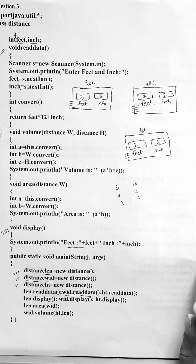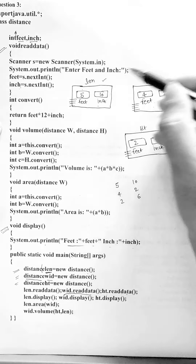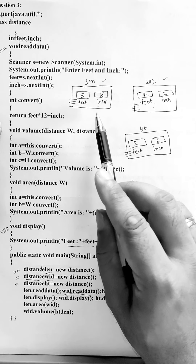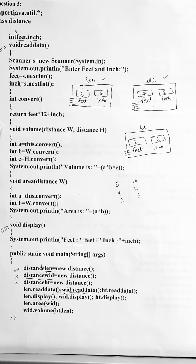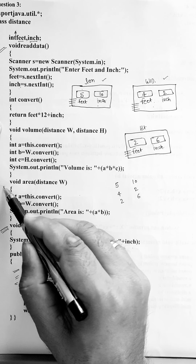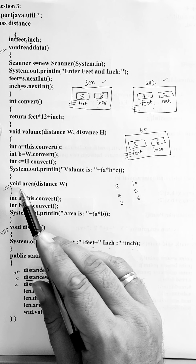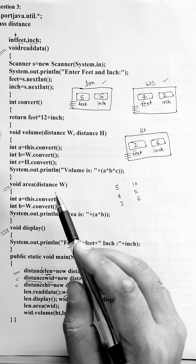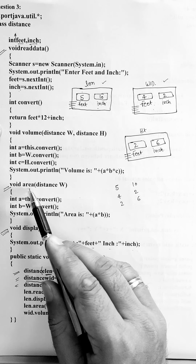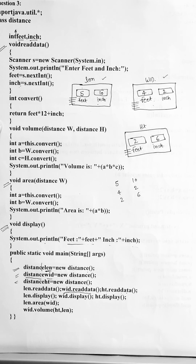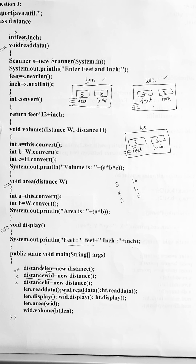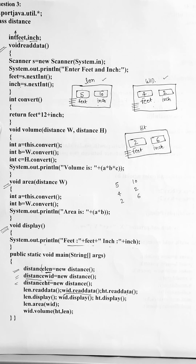To calculate the area, we need two measurements — length and width — meaning the first two objects will be engaged. To calculate area, we only need to engage the first two objects — length and width. Now look at which method is given to calculate area: void area(Distance w). The key thing here is that the area method accepts one object of the same class — Distance. To use this method, we have to pass one object of the Distance class. But a question arises: area needs two measurements, yet only one object is being passed — so how will it work?